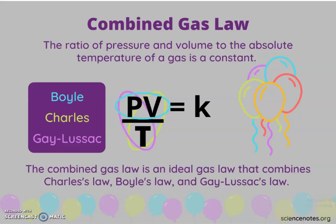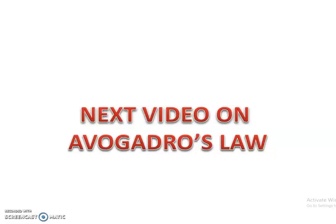By combining all three laws — Boyle's Law, Charles Law, and Gay-Lussac's Law — we get the combined gas law, given as PV/T = K, which is very useful. In the next video we will see another gas law: Avogadro's Law. Thank you.